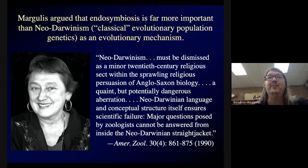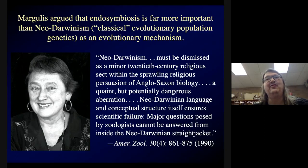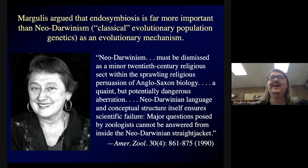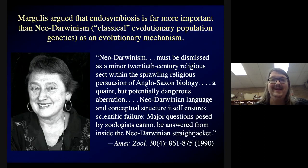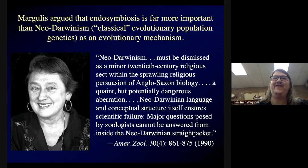Margulis argued that this kind of 'beanbag genetics' was a minor thing compared to symbiosis for generating real organismal diversity, creating new adaptations, and new types of organisms. She said: 'Neo-Darwinism must be dismissed as a minor 20th-century religious sect — a quaint but potentially dangerous aberration that ensures scientific failure. Major questions posed by zoologists cannot be answered from inside the neo-Darwinian straitjacket.'